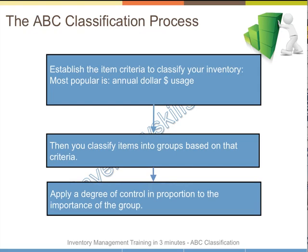So how do you classify your items? Firstly, you've got to establish a criteria to classify them. The most popular one is annual dollar usage. So if we're talking about purchased items, you look at the annual dollar spend on those items, then classify them into groups and apply a different degree of control based on those groups.